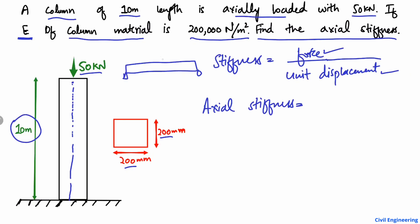If we consider a beam, the load is applied perpendicular to its axis, so in that case we call it a bending or flexural member. For a beam we have bending stiffness or flexural stiffness. Axial stiffness is only for the axially loaded member where the load acts along the axis of the member.